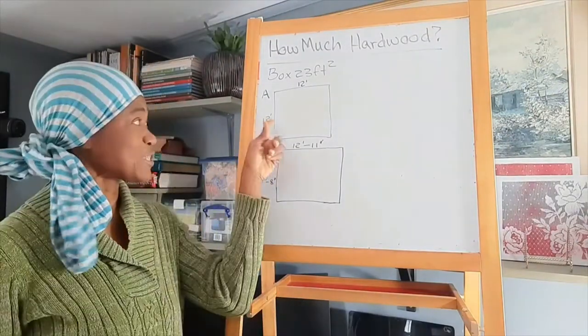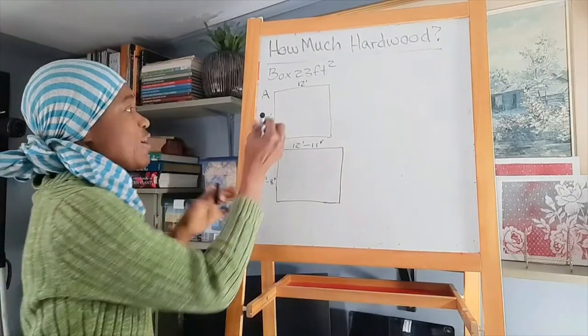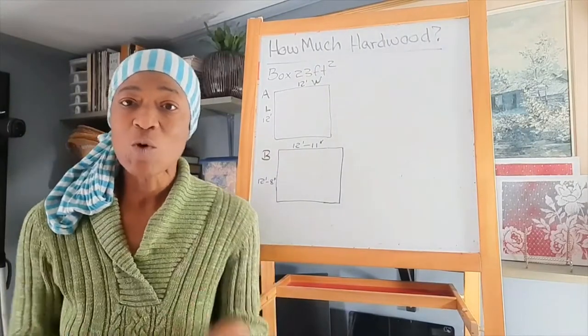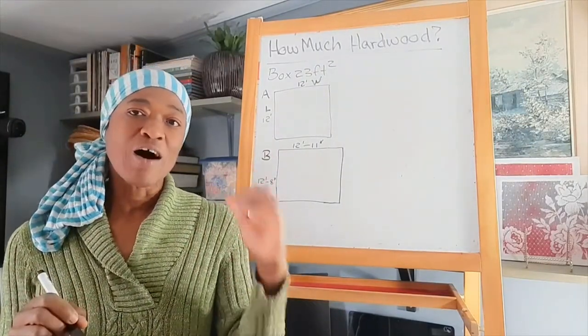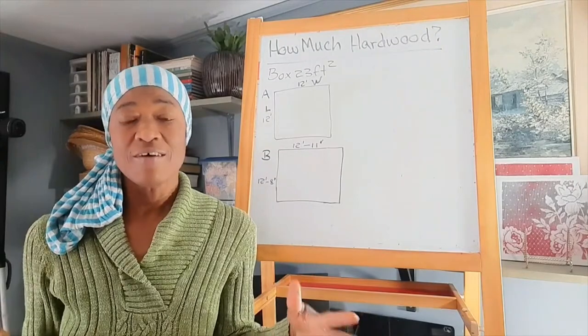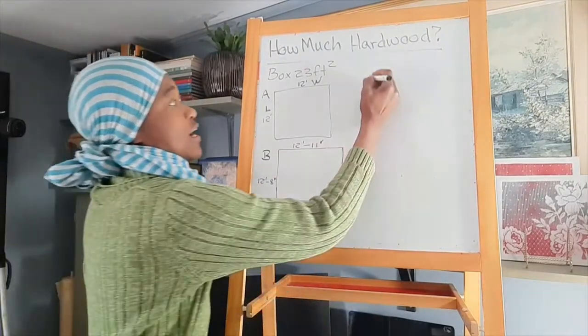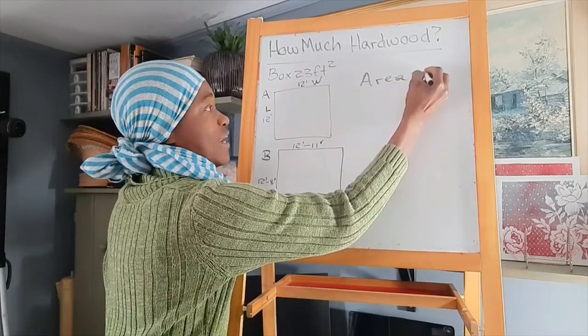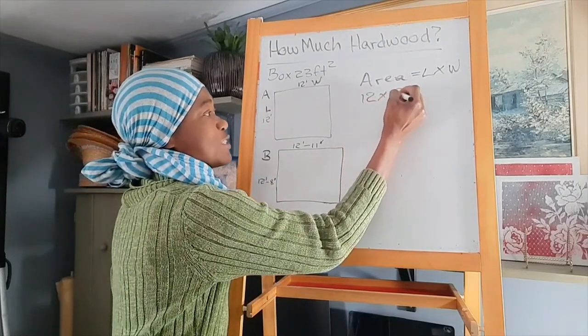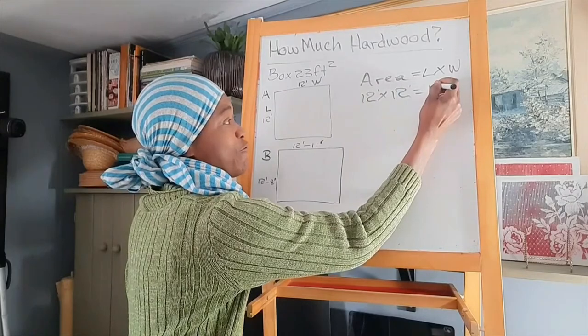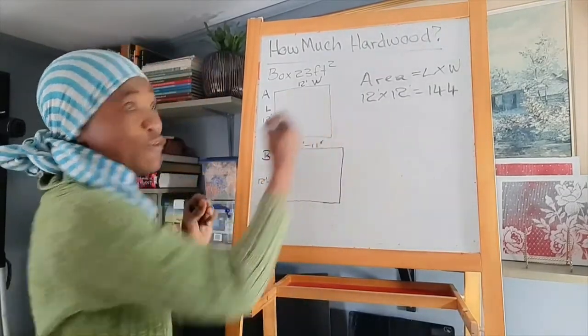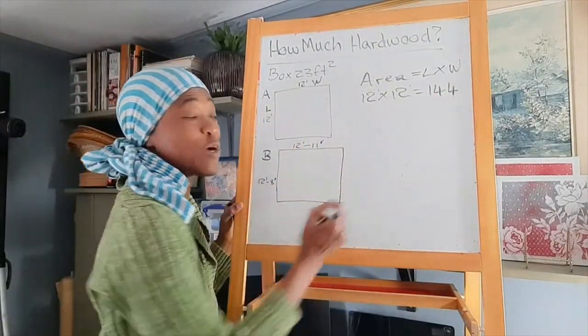We have a given space here that's 12 feet by 12 feet. So the length is 12 feet and the width is 12 feet. What we need to do first of all is calculate how much square feet are in the room, which is the area. The area of the room equals length times width. So that will be 12 times 12, which equals 144 square feet.